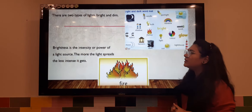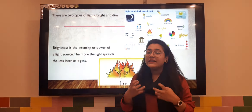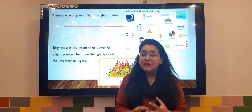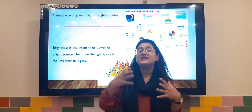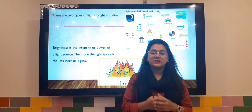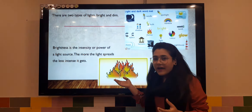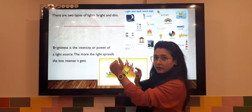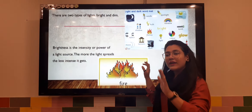Taking the example of fire: if something is very close to you, the intensity of light is more. And when it is far away, the intensity is less. In the same manner, when something is very bright just like fire, the intensity is very high. But as you move further away, the intensity of light will be less.